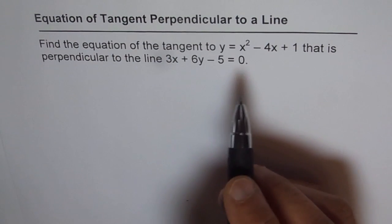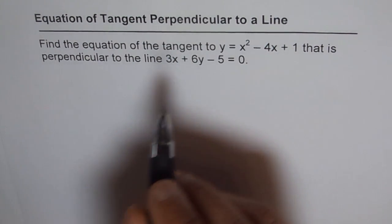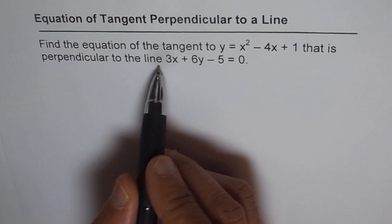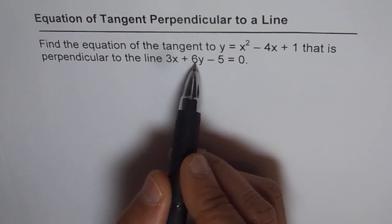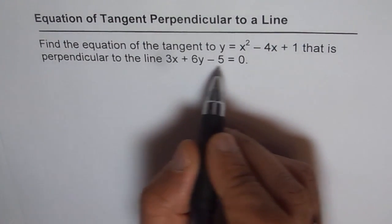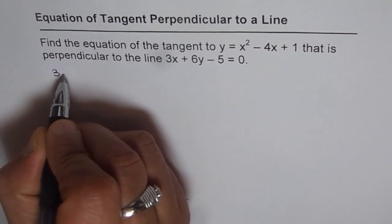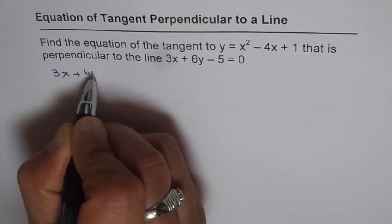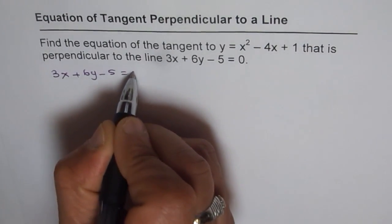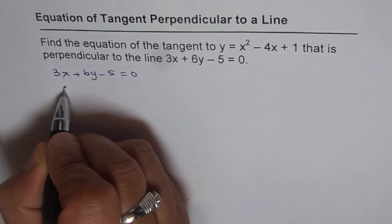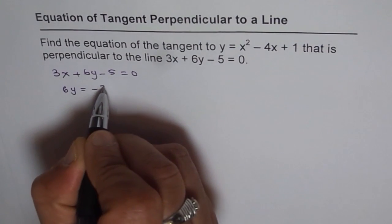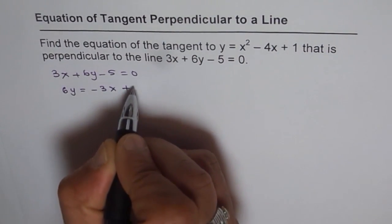Let's start with writing the required slope. It is perpendicular to the given line which is 3x + 6y - 5. So we'll rewrite this line so we can get the slope. The equation is 3x + 6y - 5 = 0. So we can write this as 6y = -3x + 5.